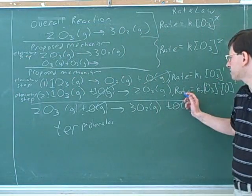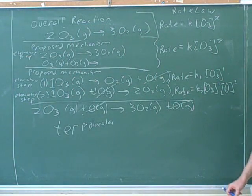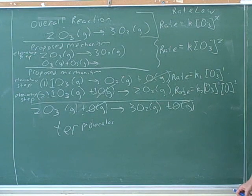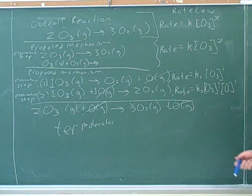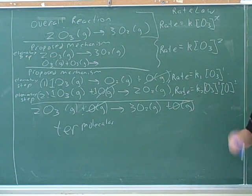So what would be the order of this rate law in the ozone? What's the order in the ozone? First order, because the exponent of the ozone is 1. What's the order in the oxygen atom? First order.